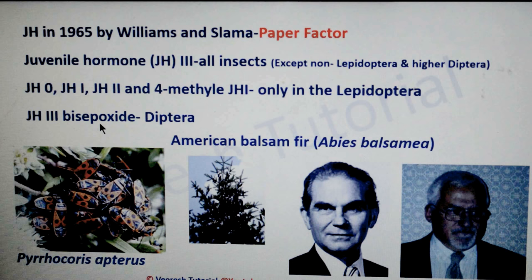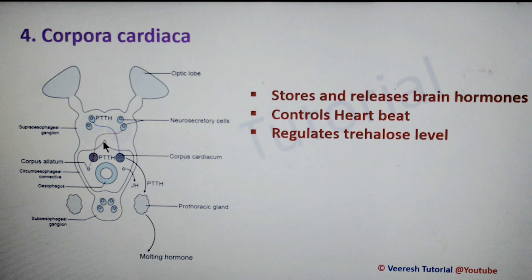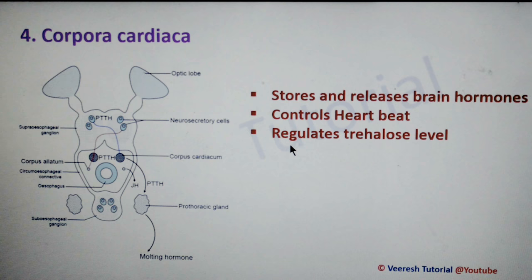The fourth endocrine gland is the corpora cardiaca — paired axonic extensions of the neurosecretory cells associated with the corpora cardiaca. It stores and releases the brain hormones from the neurosecretory cells. It controls heartbeat and regulates trehalose levels in the insect hemolymph.